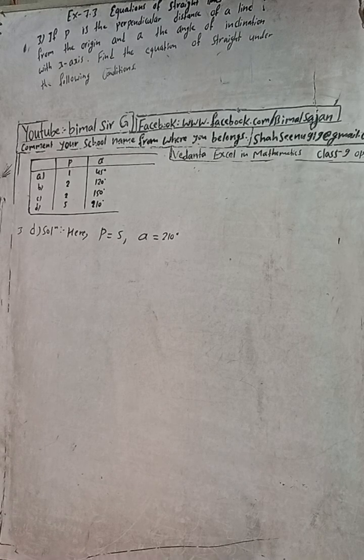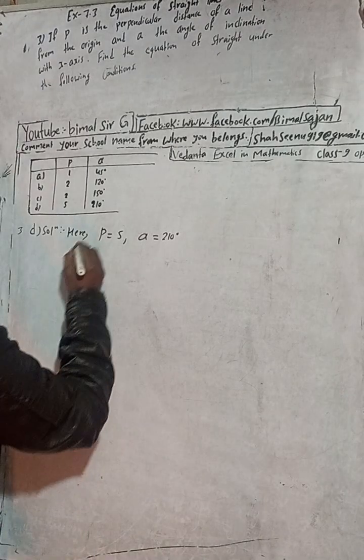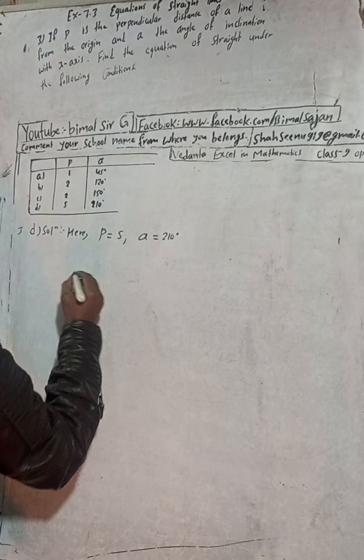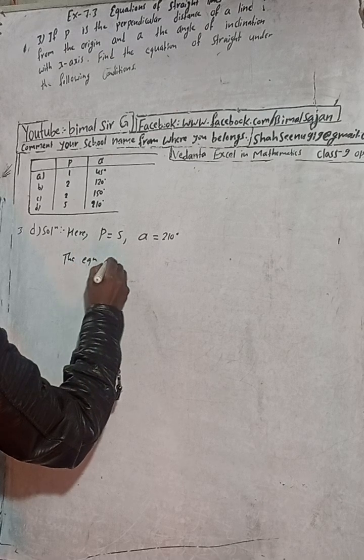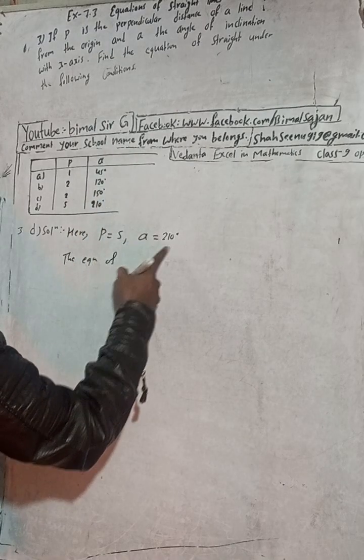It's question number 3d. Here P is given 5 and alpha is given 210 degrees. Now we can write the equation. We have to find the equation of the line.